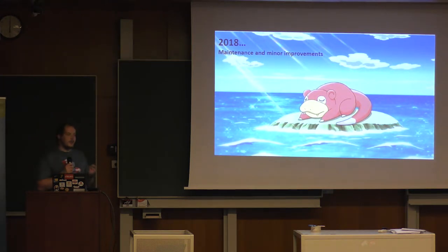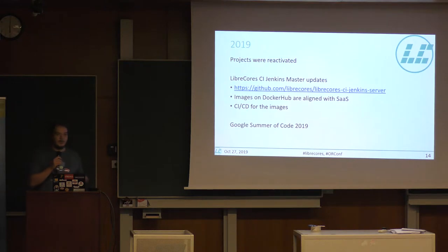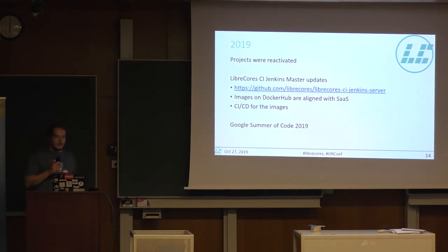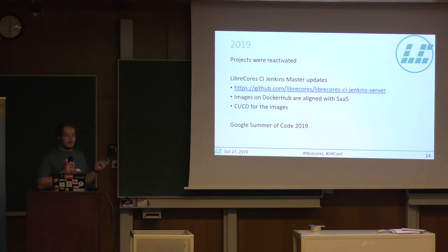But 2019 was different. We had several students reaching out through the GSOC program to ask whether they could contribute, and we started working towards refreshing our ecosystem. There were a lot of updates, mostly related to the LibreCourse CI Jenkins master image — this image is now updated with new versions, we got CI/CD running, and it got into a much better state. Though this may be interesting to you only if you use Jenkins or consider using LibreCourse CI.